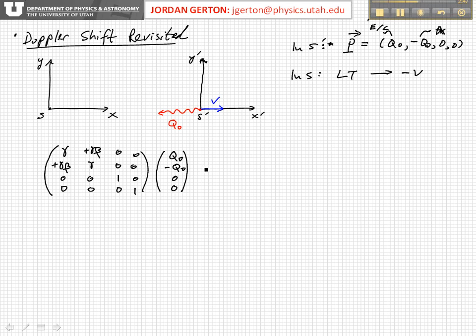And so when you basically carry this out, what you get is for the first term, first component, you get gamma times Q naught plus gamma beta times minus Q naught. For the second component, you get gamma beta times Q naught minus gamma times Q naught, and then you get two zeros.